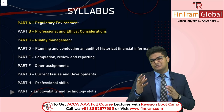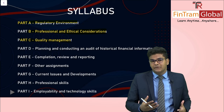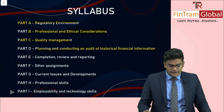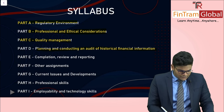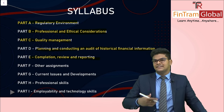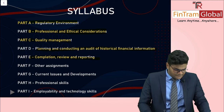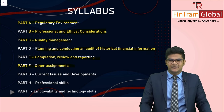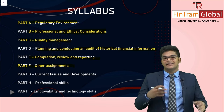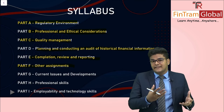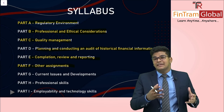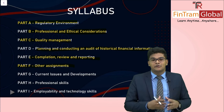There are also new aspects relating to sustainability. In Part D we look at planning and conducting an audit of historical financial information. Part E covers completion, review, and reporting — how the auditor provides their opinion and how the audit report is structured. Part F covers other assignments such as review engagements, agreed-upon procedures, due diligence, forensic audit, and auditing KPIs or key performance indicators.